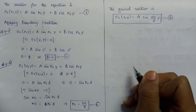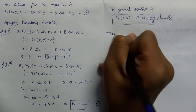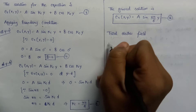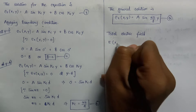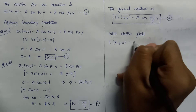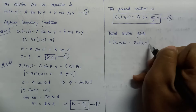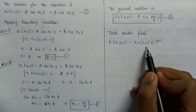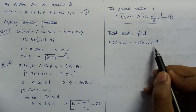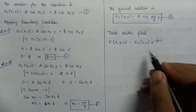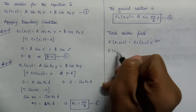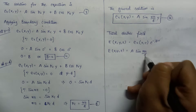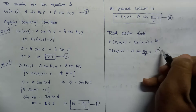Now let us discuss about the total electric field. The total electric field in rectangular components x, y, and z is given as ez(x,y) multiplied by e to the power minus jβz. Here, ez(x,y) is the transverse electric field, and e to the power minus jβz represents wave propagation in the z direction. Substituting the value, it becomes A sin(nπ/d · y) multiplied by e to the power minus jβz, where β equals the square root of k squared minus kc squared.